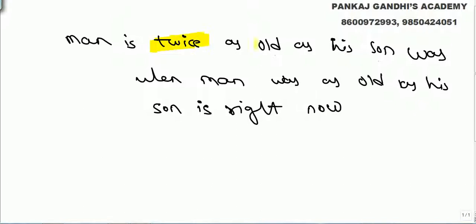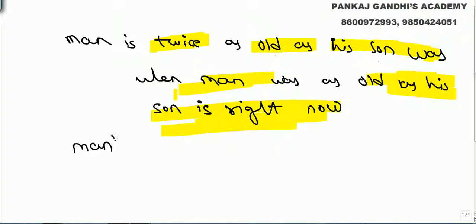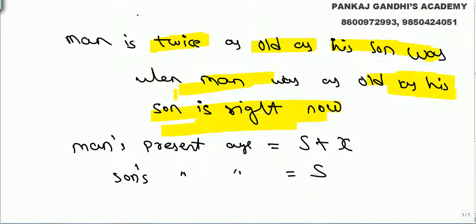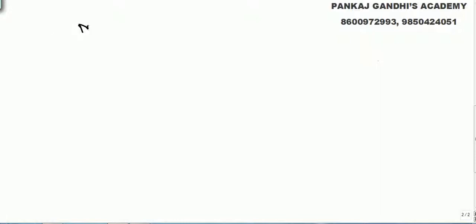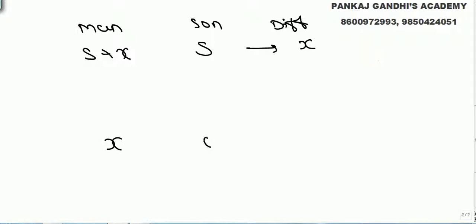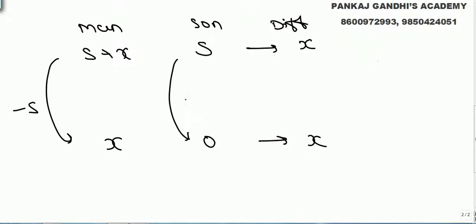The question is: a man is twice as old as his son was when the man was as old as his son is right now. Let's say man's present age is s plus x and son's present age is s — so man is x years elder to the son. The difference between their ages is always x, so when son was born, x years back, father's age was x.